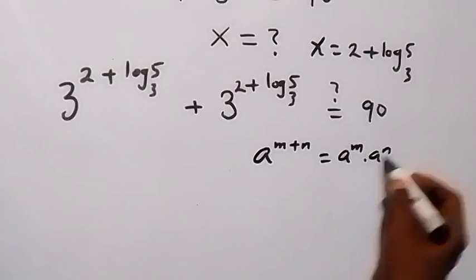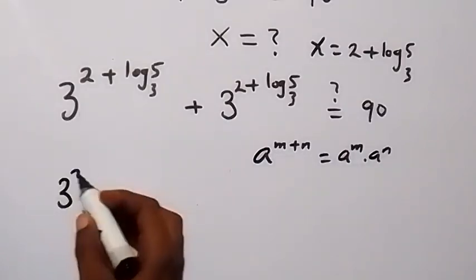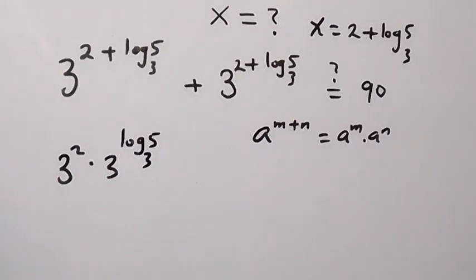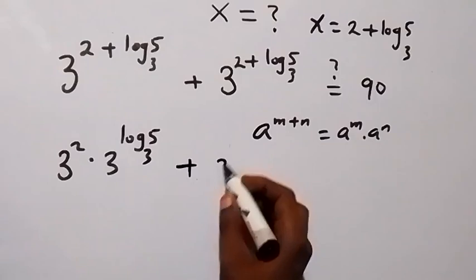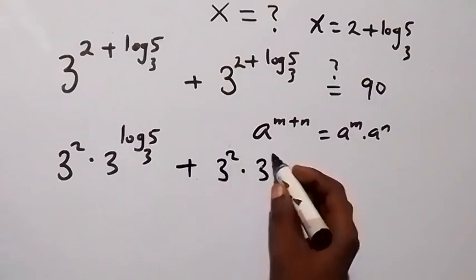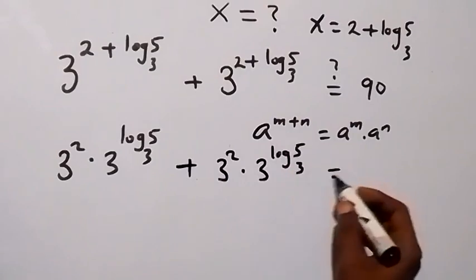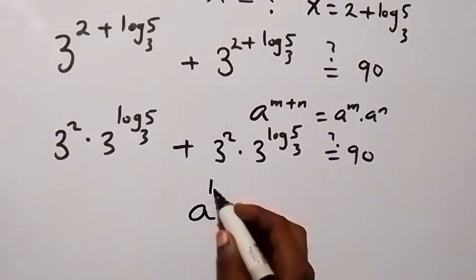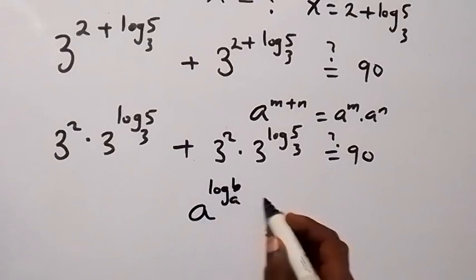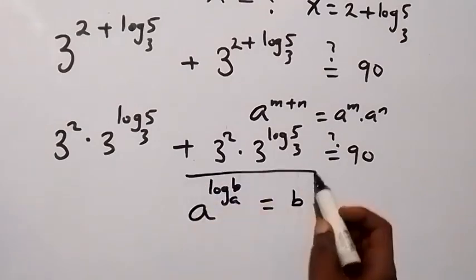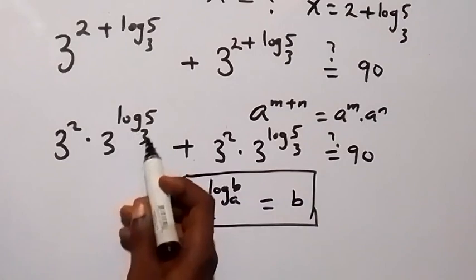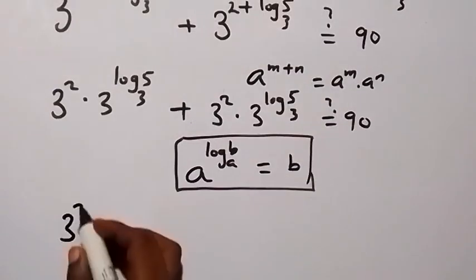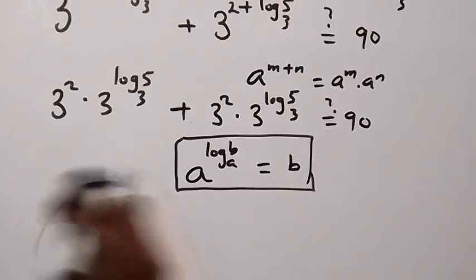Using the exponent rule a^(m+n) = a^m × a^n, we have 3 squared times 3 raised to the power log base 3 of 5, plus 3 squared times 3 raised to the power log base 3 of 5. Applying the log identity — a raised to log base a of b equals b — we get 3 raised to log base 3 of 5 equals 5.